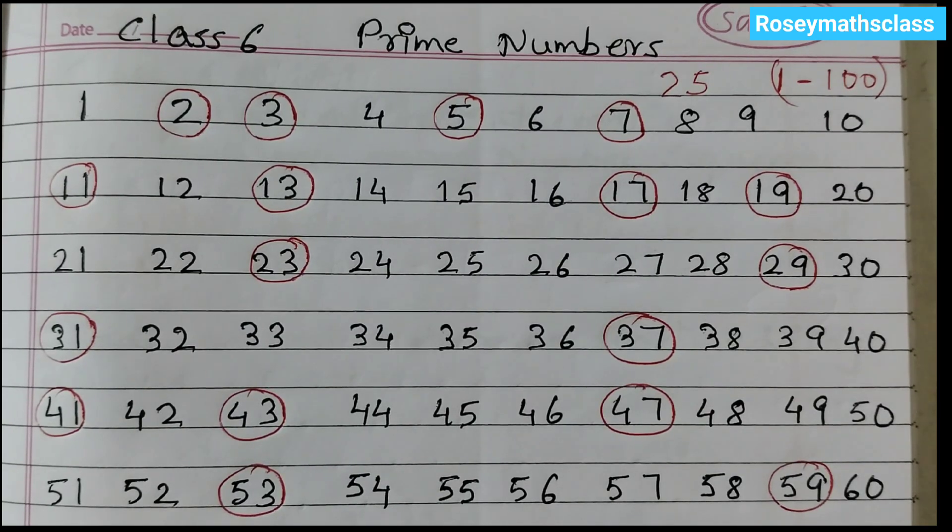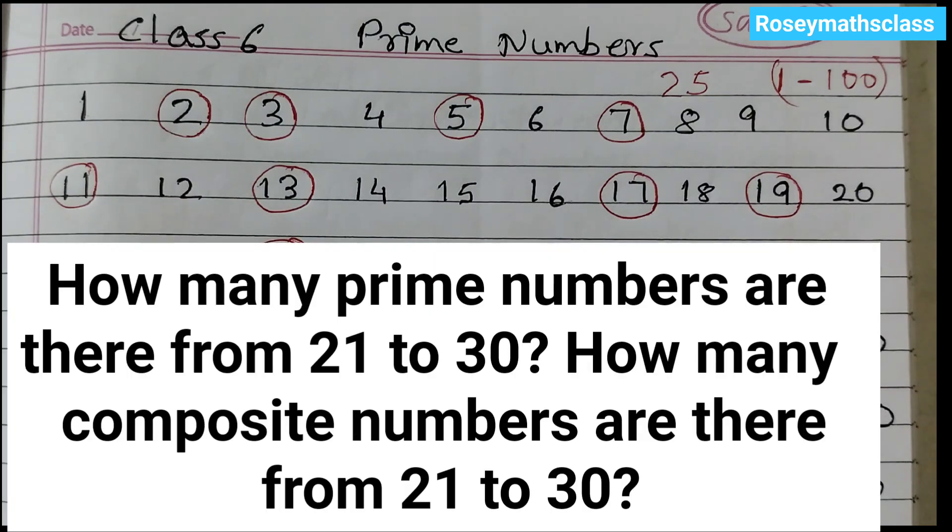Hello students, today we shall discuss the question which is given on page number 113. How many prime numbers are there from 21 to 30? How many composite numbers are there from 21 to 30?